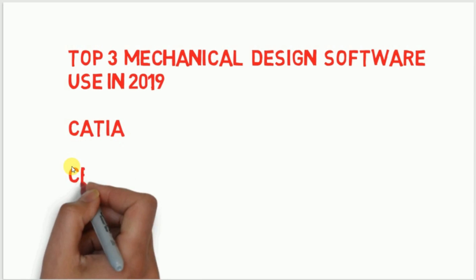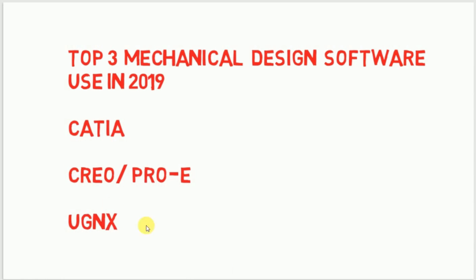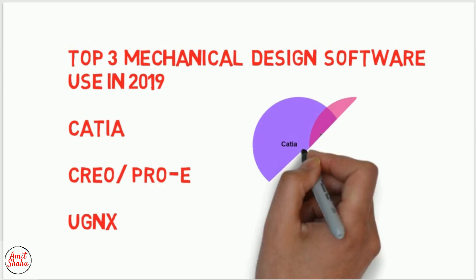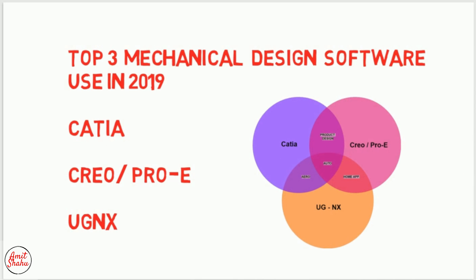I've taken these three software because they are in the higher range. I already made one video on top mechanical design software used in the mechanical industry, where I distinguished these as higher-level software. SolidWorks and AutoCAD are in the 2D domain, so those are lower-end software. These three software are basically used most in industries like automobile, aerospace, home appliances, product design, tool design, and SPM.